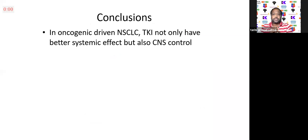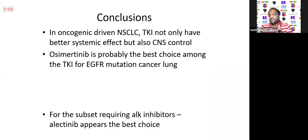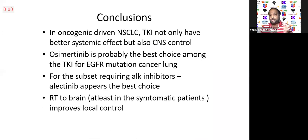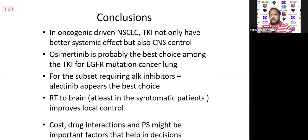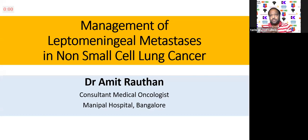In conclusion: in oncogenic-driven NSCLC, TKI not only has better systemic control but also good CNS control. Osimertinib is probably the best drug among TKIs for EGFR mutation lung cancer. For ALK-positive patients requiring ALK inhibitors, alectinib appears the best choice. RT to the brain at least in symptomatic patients improves local control. Cost is very important — and performance status may be important factors helping in decisions. Drug interactions also matter, as some drugs avoid liver metabolism.